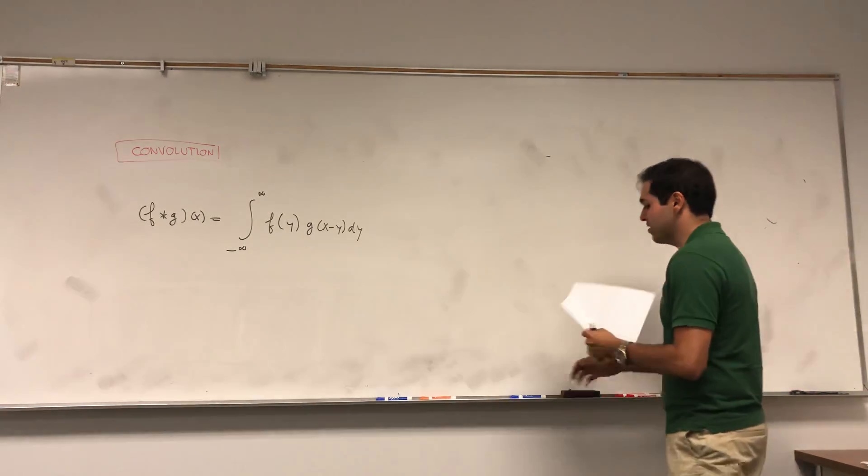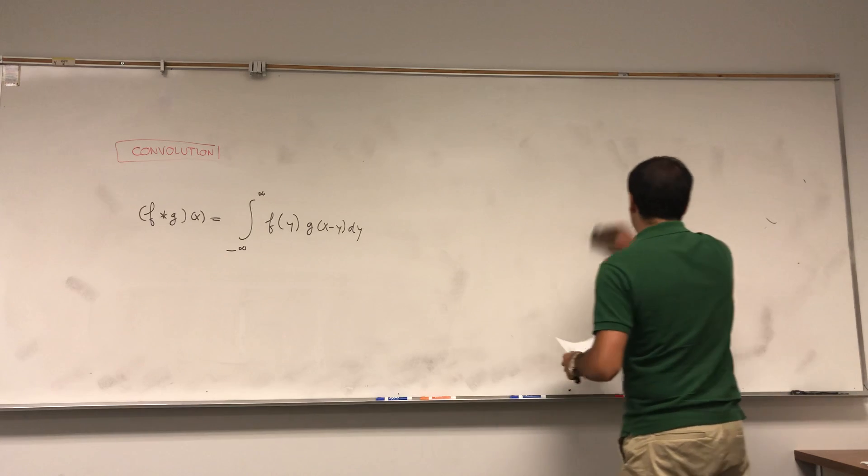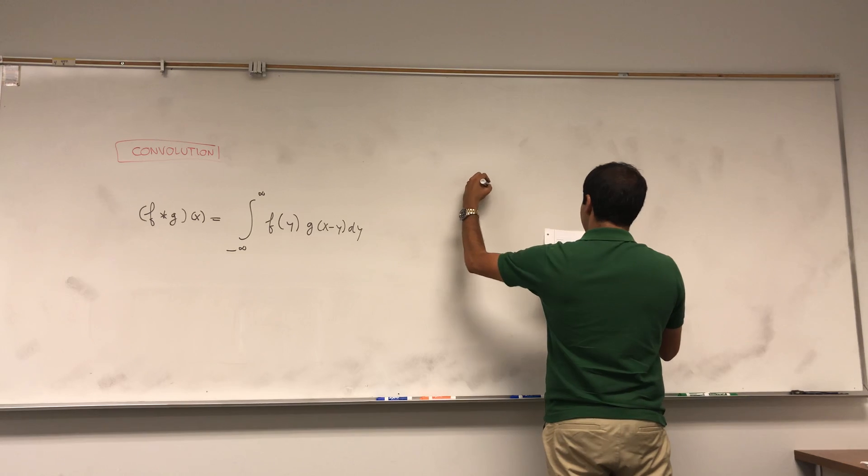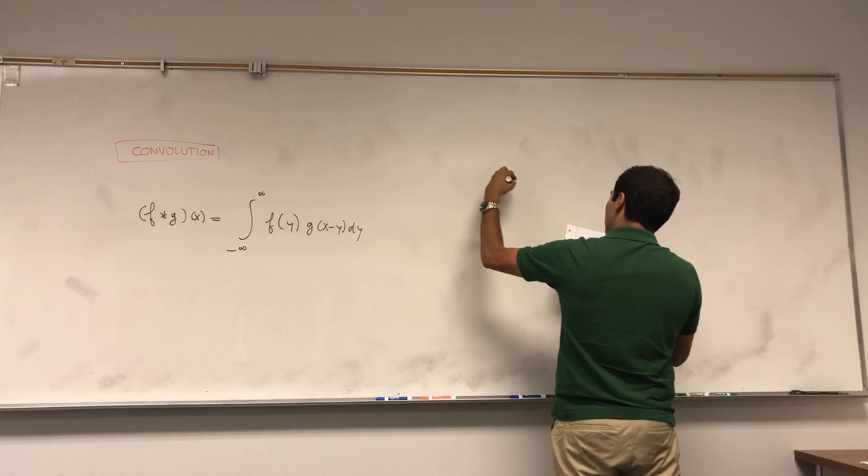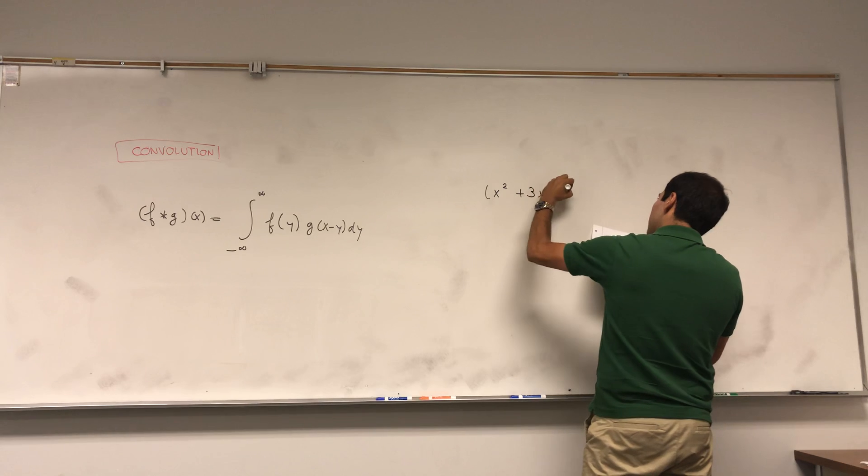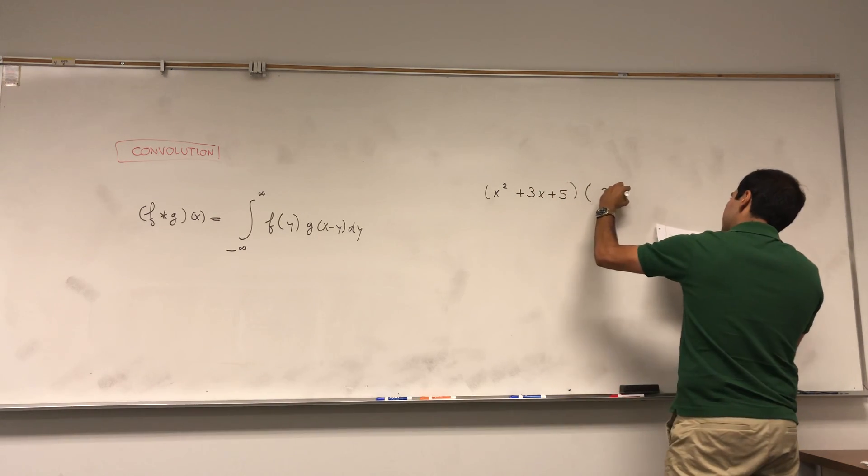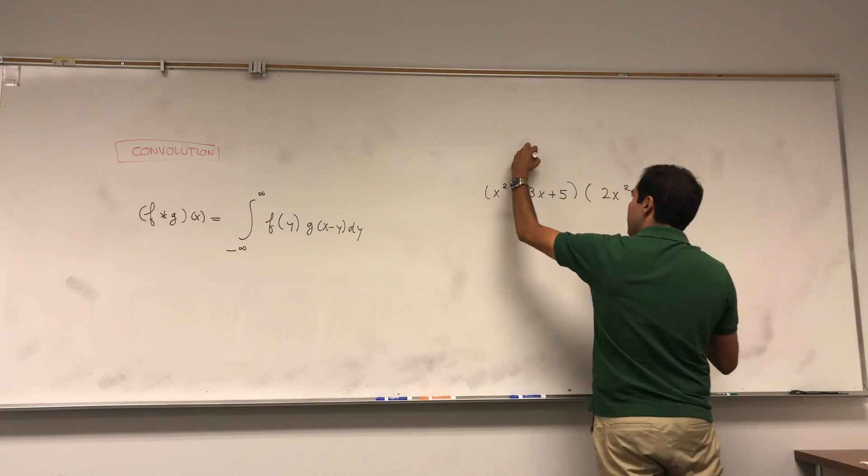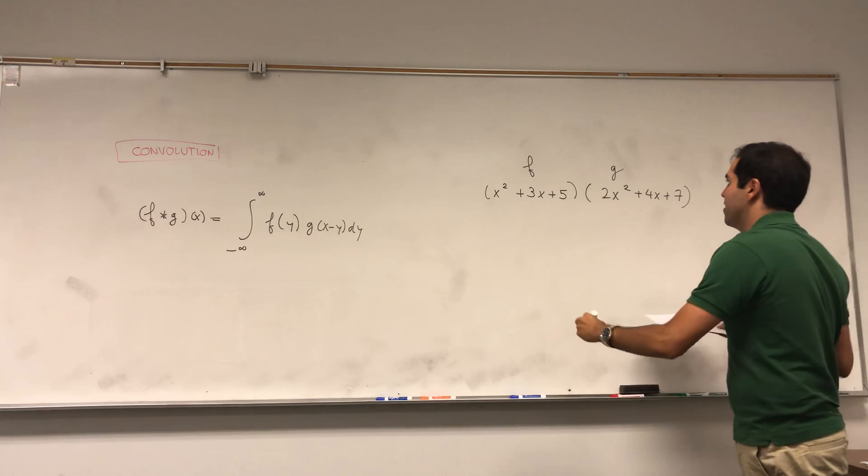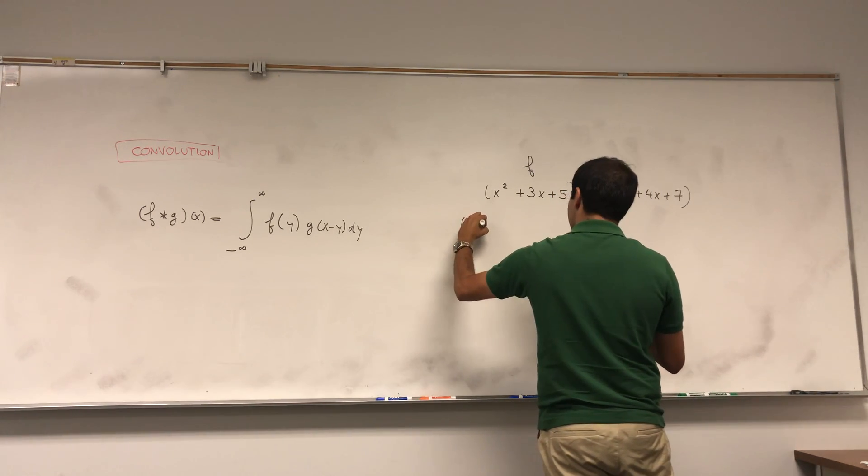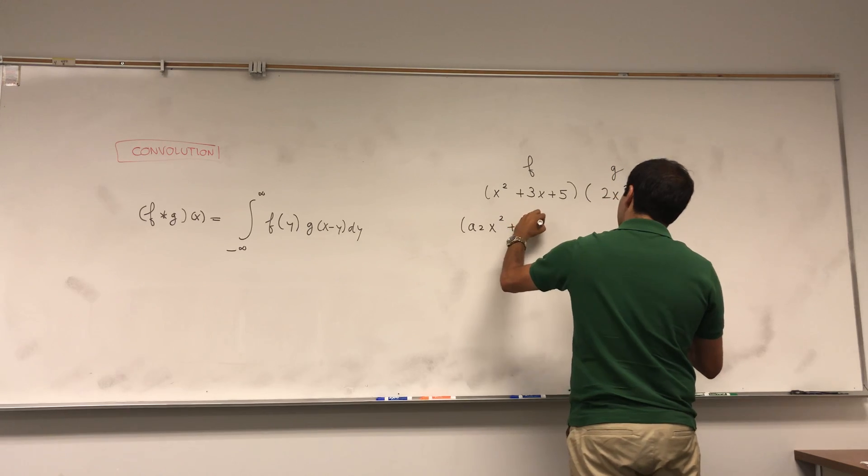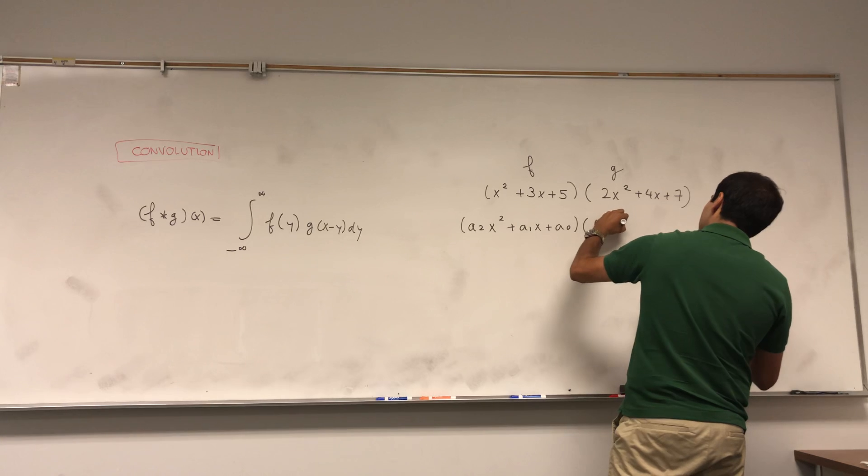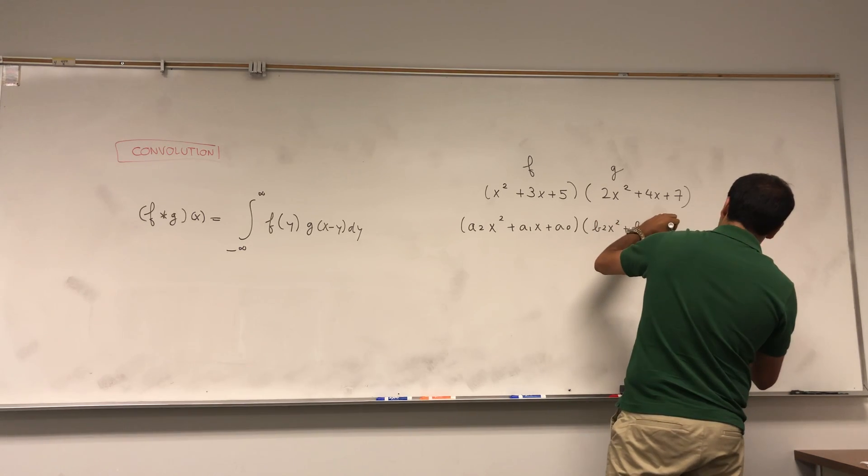So suppose that somehow our functions are polynomials. Take, for example, the two polynomials x² + 3x + 5 and 2x² + 4x + 7. Suppose those are functions f and g, and you just multiply them as polynomials and think of it in general as a₂x² + a₁x + a₀ and then b₂x² + b₁x + b₀.